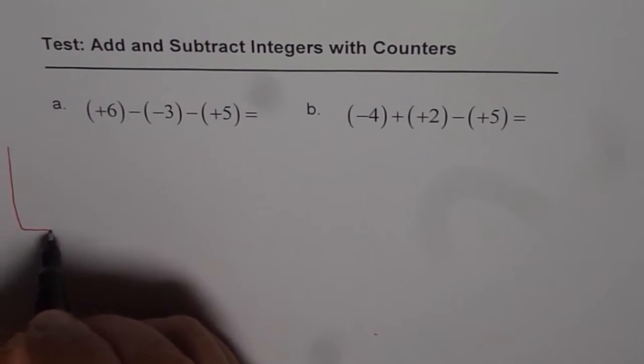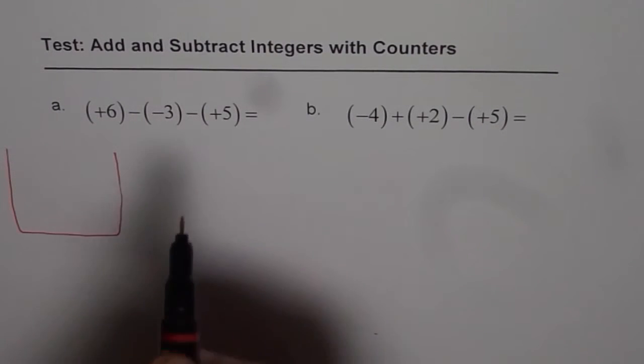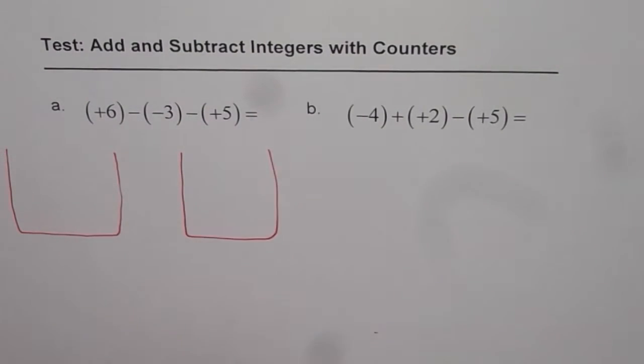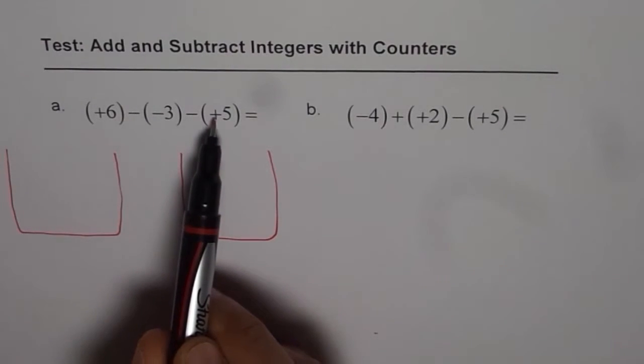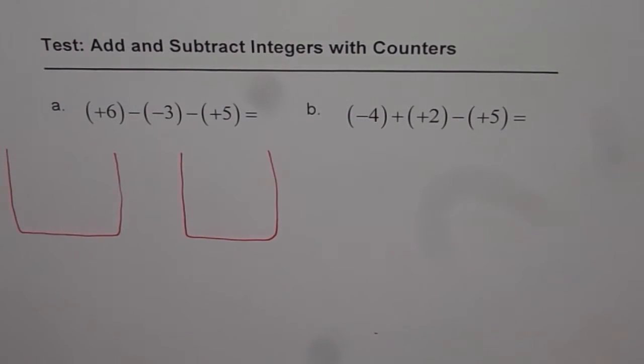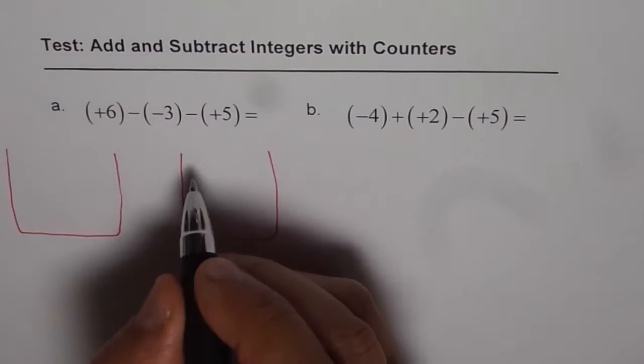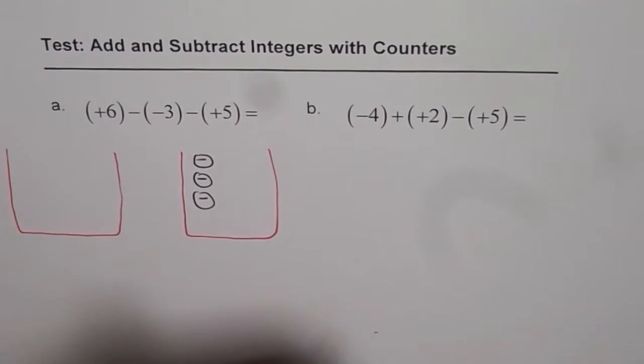This bucket is from where we have to take away and this bucket is the quantity which we have to take away. So we have to take away (-3) and (+5). Let me write down the counters here in this bucket which is having (-3). So (-3) will mean 1, 2 and 3. There is (-3).